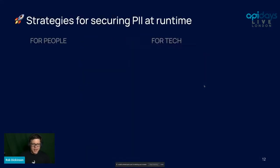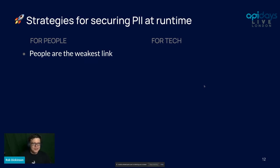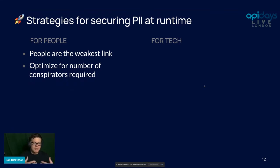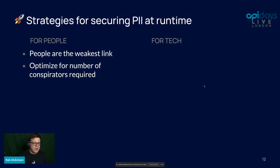So what are the positive strategies? Even this year, people are still the weakest link — people make mistakes and can be exploited. So you want to optimize for the number of conspirators — the number of people who have to mess up, either intentionally or unintentionally, to create the conditions for a breach. That's why you don't want a god-mode administrator. When you look at how many people can keep a secret, it really breaks down at about three or four people.